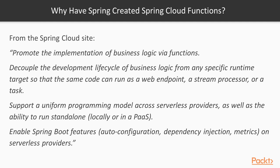Also, whether you're running in the cloud or locally is a key point here. Typically to run functions for AWS, you either have to deploy them to the cloud or set up a SAM local or serverless architecture model locally, which is quite a bit of hassle. Spring Cloud Functions take that away, and you can get the function built and deployed locally for testing within a few minutes. And finally, Spring Cloud Functions provide all the capabilities of a Spring Boot application — auto-configuration, dependency injection, metrics, etc. — and these will be available on serverless providers too.